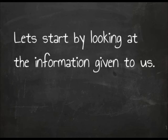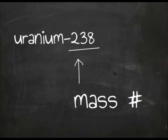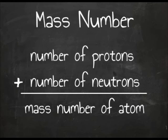Let's start by looking at the information that is given to us. In uranium-238, the 238 stands for the mass number. The mass number is the number of protons plus the number of neutrons, and that equals the total mass number of the atom.